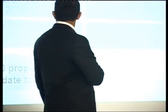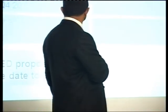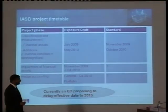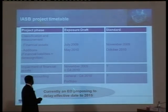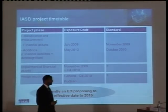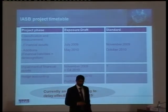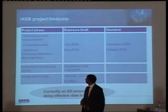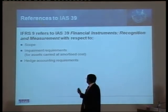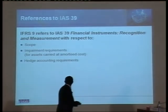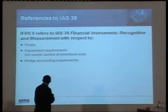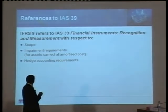The parts we're going to cover now are assets and liabilities. There is also a proposal - an exposure draft - at the moment to delay the effective date to 2015. You still have to go back to IAS 39 for scope, impairment requirements, and hedge accounting.